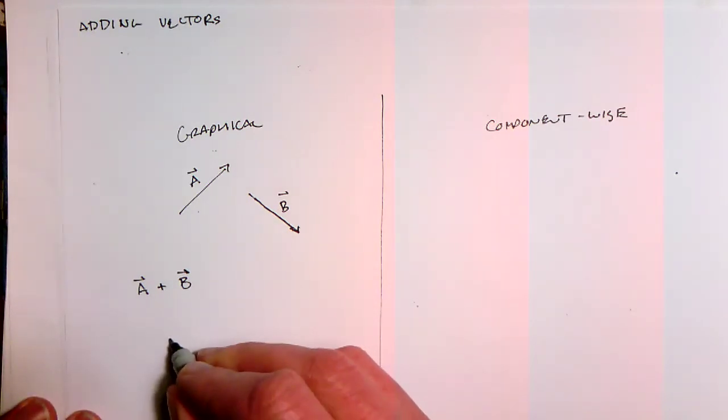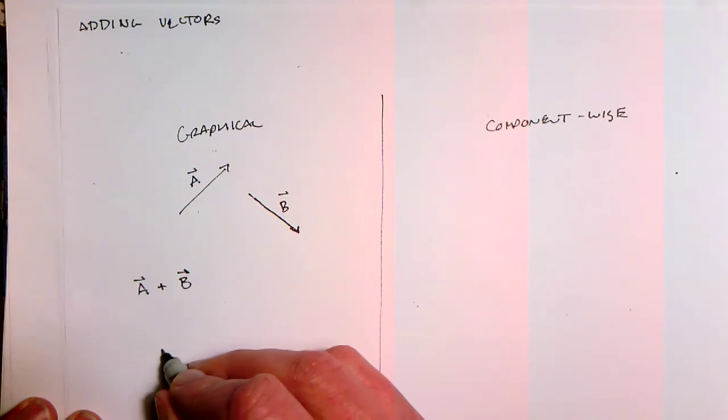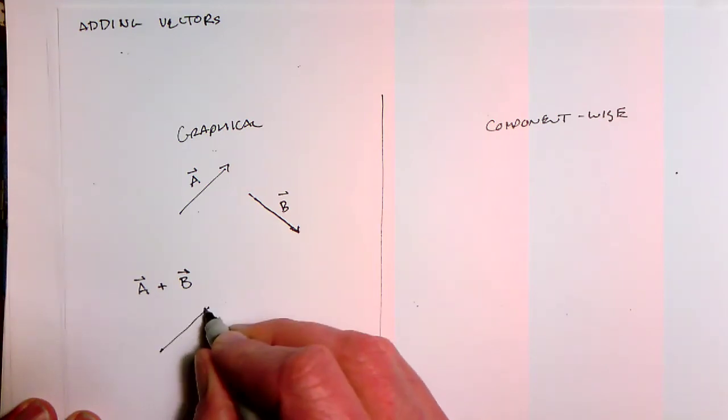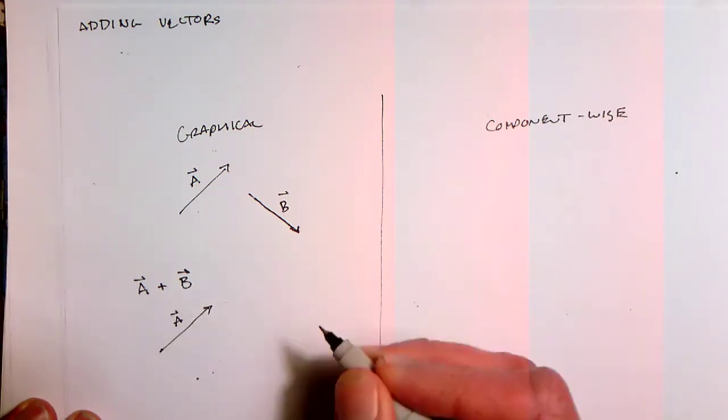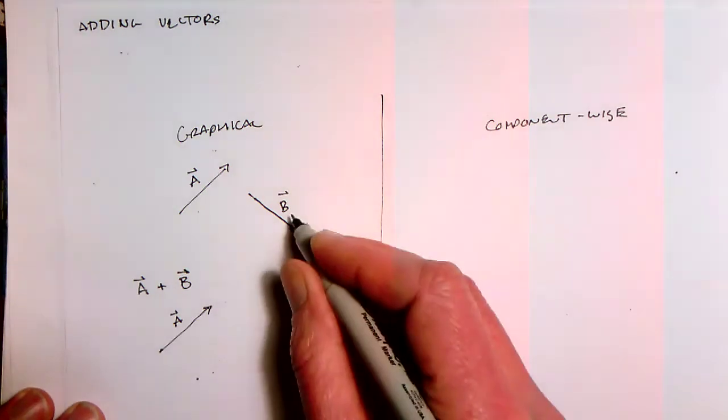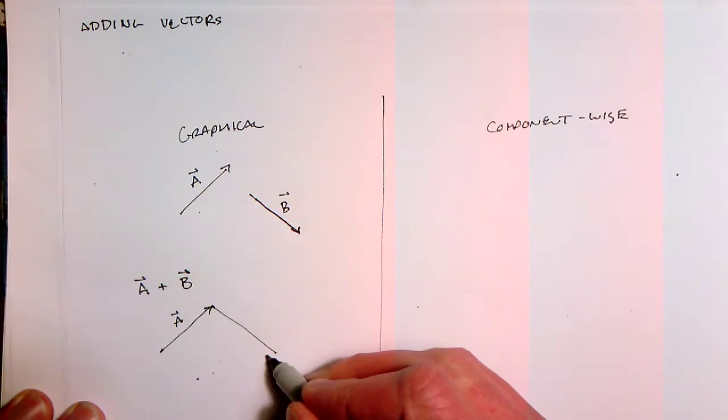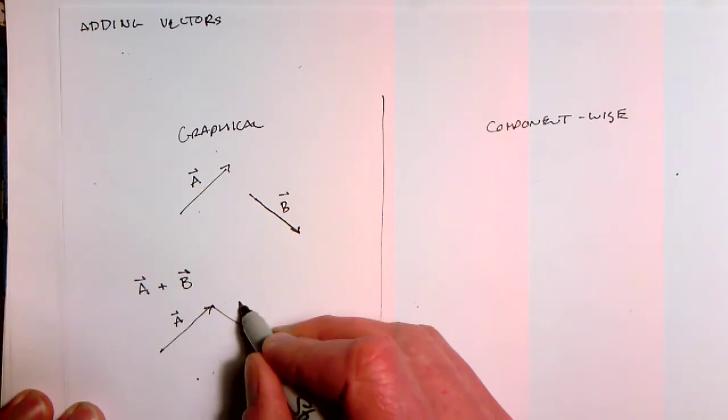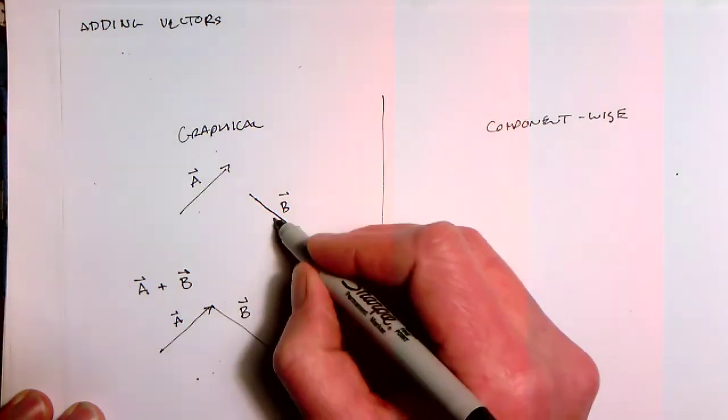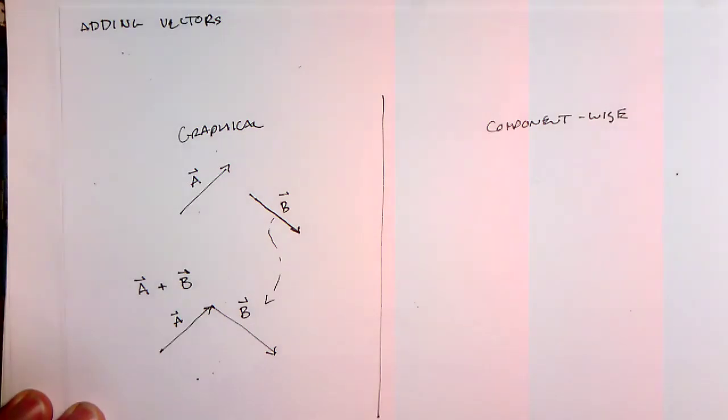Which leads us to this graphical way of adding vectors, which is also known as head to tail. So we draw the first vector A, and if we want to add B to A, we take B and we move B so the tail of B lines up with the head of A. So you make this construction where you've taken this B and moved it here so they line up.